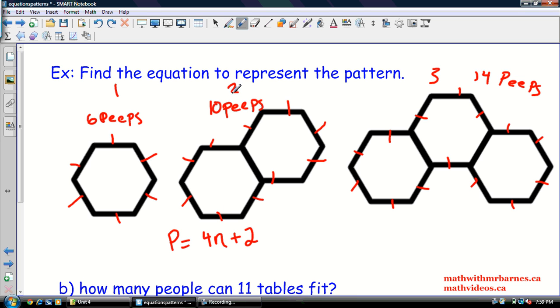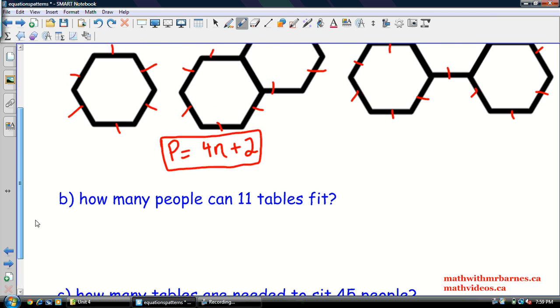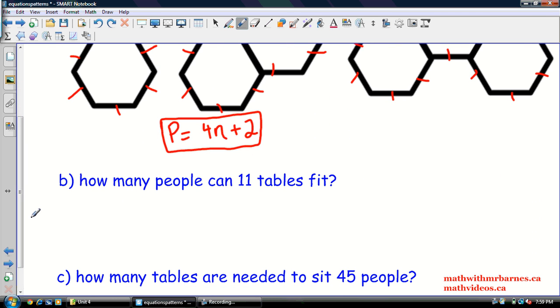Let's try it. So two tables. So two times four is eight plus two is 10. So yeah, we're in business. This is our equation.